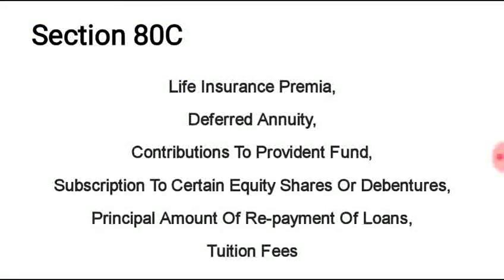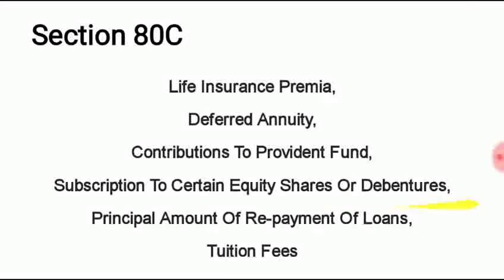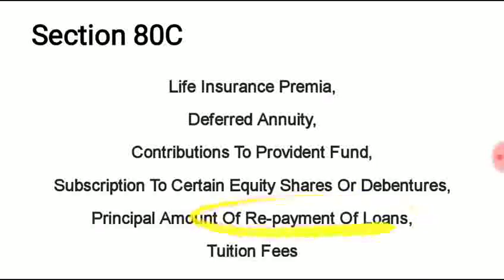Under Section 80C, deductions include life insurance premium, deferred annuities, contributions to provident funds such as GPF and SLI, subscription to certain equity shares or debentures, principal amount of repayment of home loans — which we have also discussed in a separate video — and tuition fees for up to two children.